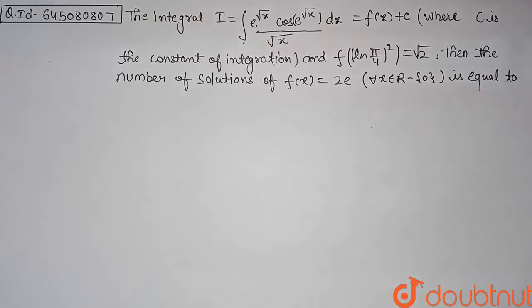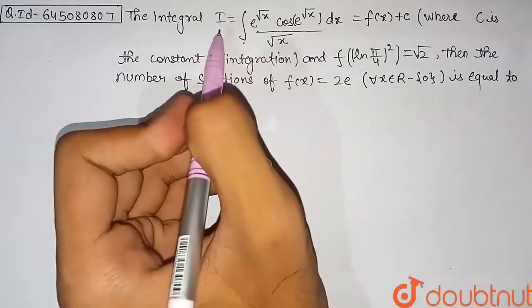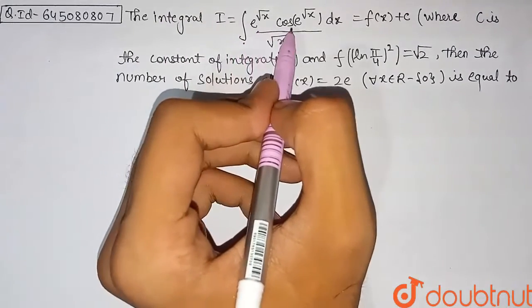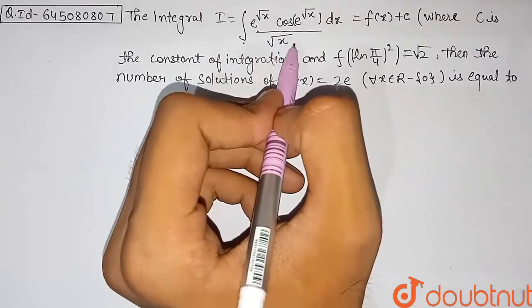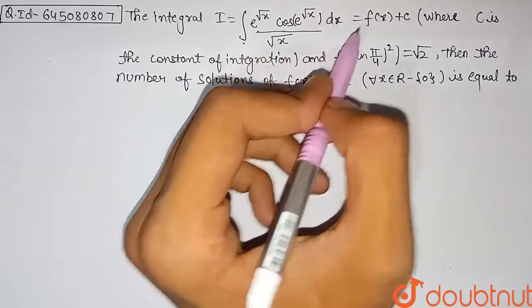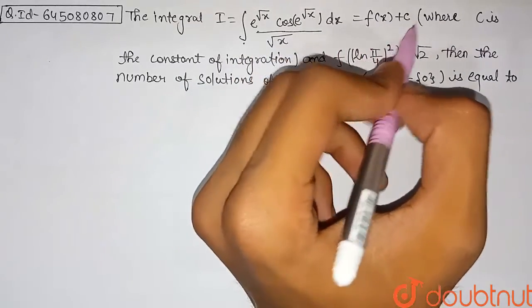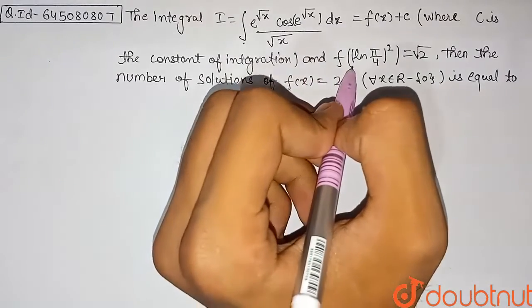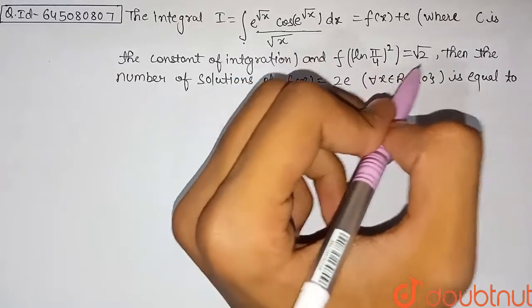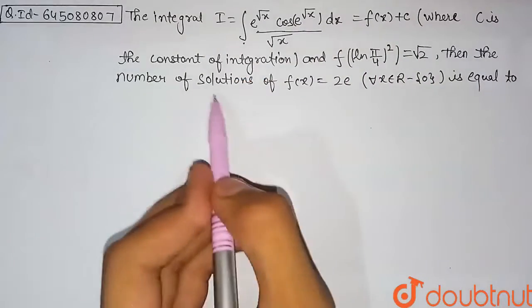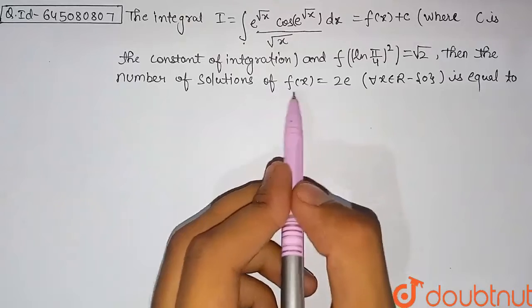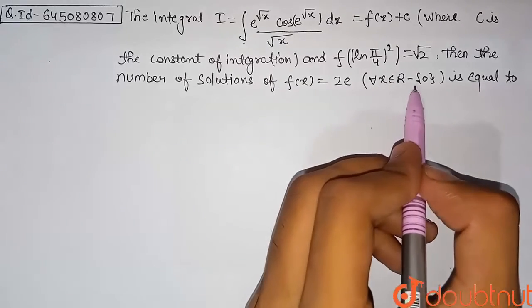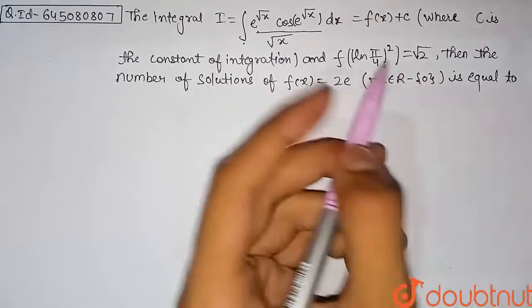Hello students, let's discuss the question. The integral I equals the integration of e^(√x) multiplied by cos(e^(√x)) divided by √x dx, which equals f(x) + c, where c is the constant of integration, and f(ln²(π/4)) = √2. Then find the number of solutions of f(x) = 2e for all x belonging to ℝ minus {0}.